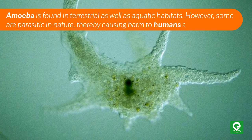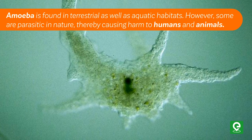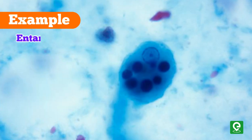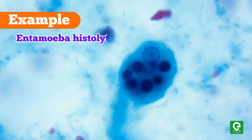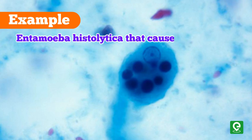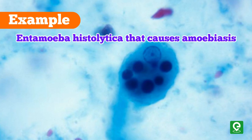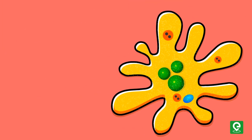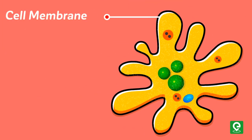Amoeba is found in terrestrial as well as aquatic habitats. However, some are parasitic in nature, thereby causing harm to humans and animals. For example, Entamoeba histolytica causes amoebiasis.